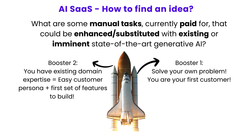Try to see what are some manual tasks that are currently paid for, which could be completely enhanced, revamped with a new setup with AI, or just substituted — replaced or provided with more features using existing or imminent state-of-the-art generative AI. The reason I mention existing or imminent is because current AI could do it, or the AI that will evolve in the next two to three years should be able to do it.